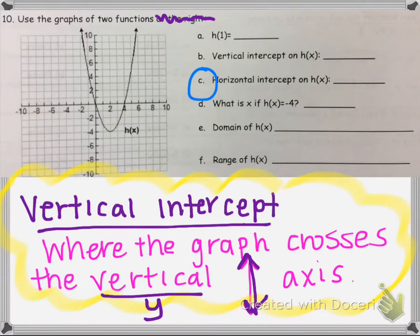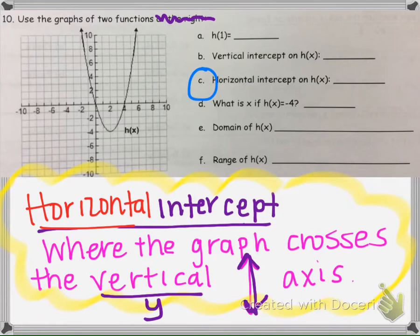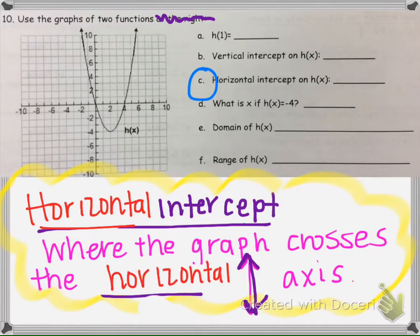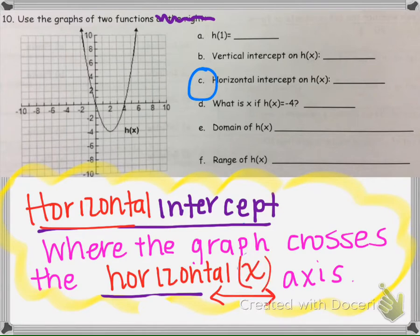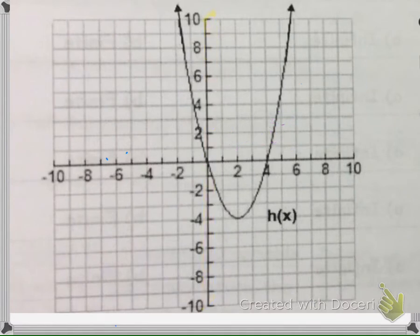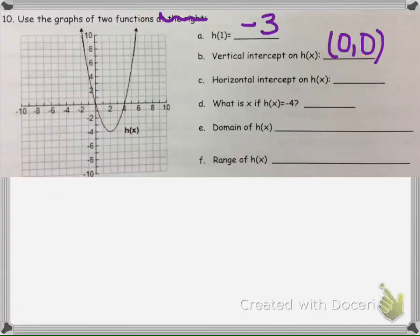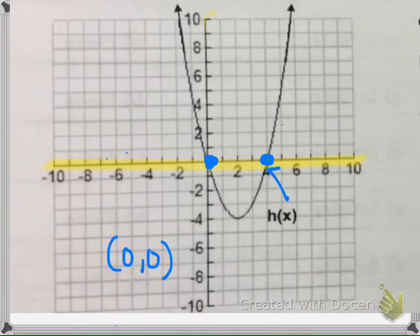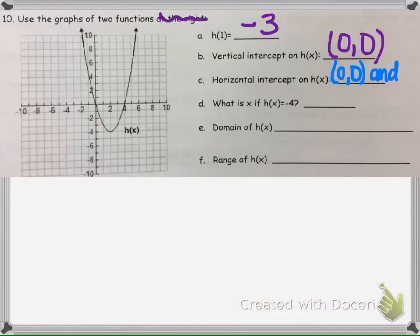Now we're asked to find the horizontal intercept, which is where the graph crosses the horizontal axis — typically the x-axis. The graph crosses here at (0, 0), and it also crosses here at (4, 0). So the horizontal intercepts are (0, 0) and (4, 0).